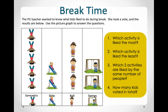Now they ask us, which activity is liked the least? We have two activities that very little people like. We can see them over here: 1, 2, and then 1, 2. So very little people like to go on the slide and the swings. That's the least number of people who like to do that activity.